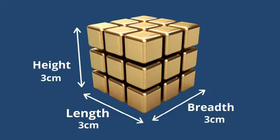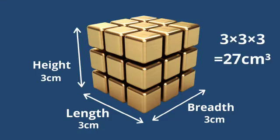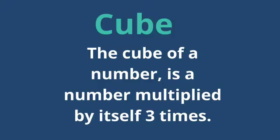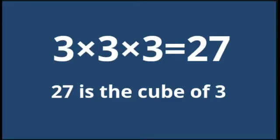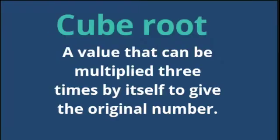So the volume of this cube will be 27 cm cubed. The cube of a number is a number multiplied by itself 3 times. When we multiply 3 times 3 times 3, it gives 27. So 27 is the cube of 3.